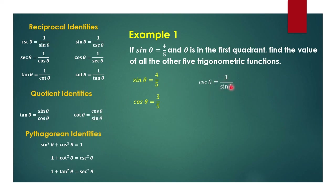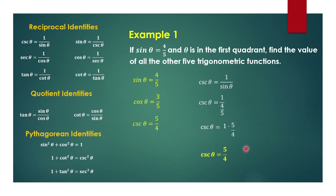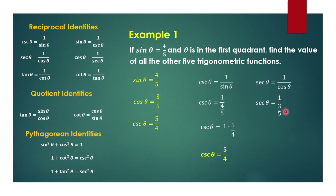Using the identity, 1 over sin theta which is 4 over 5 gives us 1 times 5 over 4, so cosecant theta is equal to 5 over 4. The same applies to cosine theta — since the reciprocal of cosine is secant, secant theta is 5 over 3. We can verify: 1 over cosine theta which is 3 over 5 equals 1 times 5 over 3, so secant theta is equal to 5 over 3.